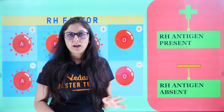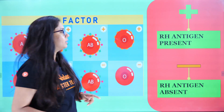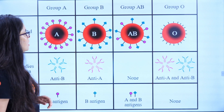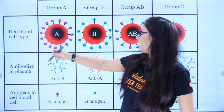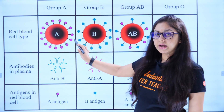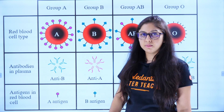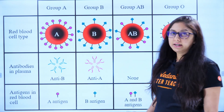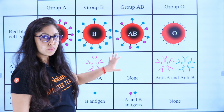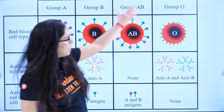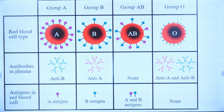Let us recap: Blood group A has antigen A on RBC and antibody B in plasma. Blood group B has antigen B on RBC and antibody A in plasma. Blood group AB has both A and B antigens on RBC and no antibody in plasma. Blood group O has no antigen on RBC but both antibody A and antibody B in plasma. Take a screenshot of this for revision.